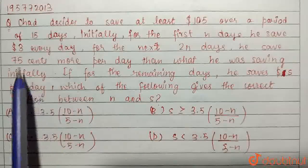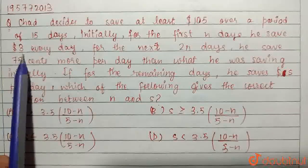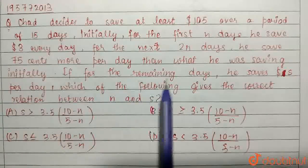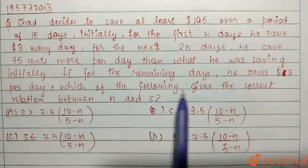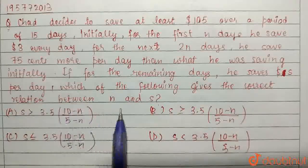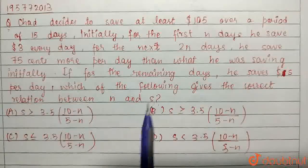So, 75 cents more than 3 dollars. If for the remaining days he saves S dollars per day, which of the following gives the correct relation between N and S?